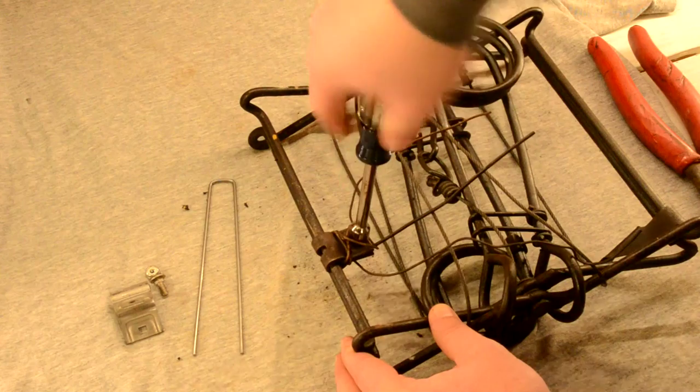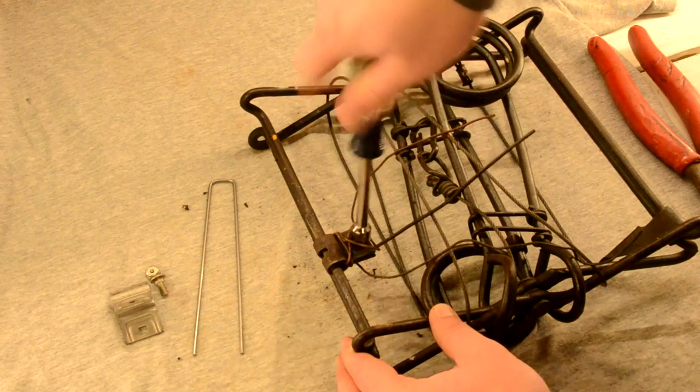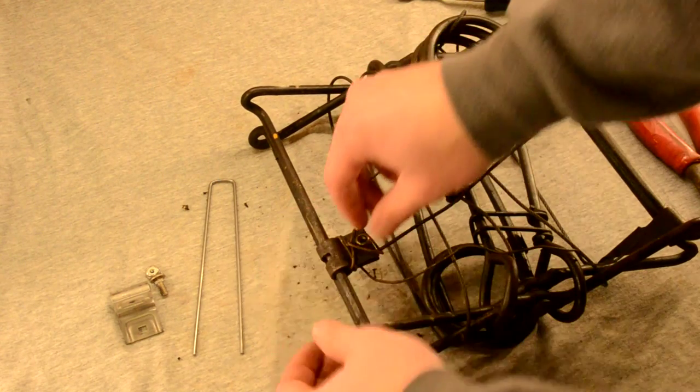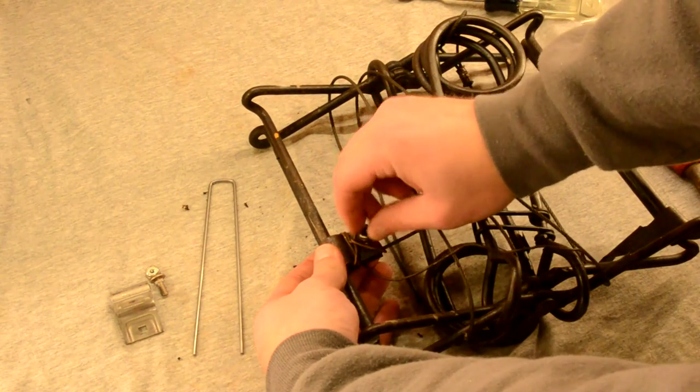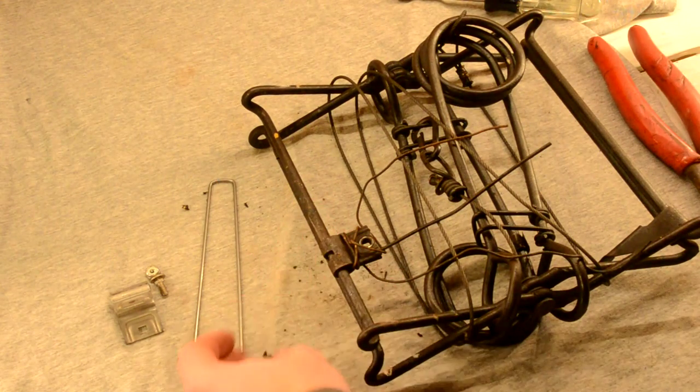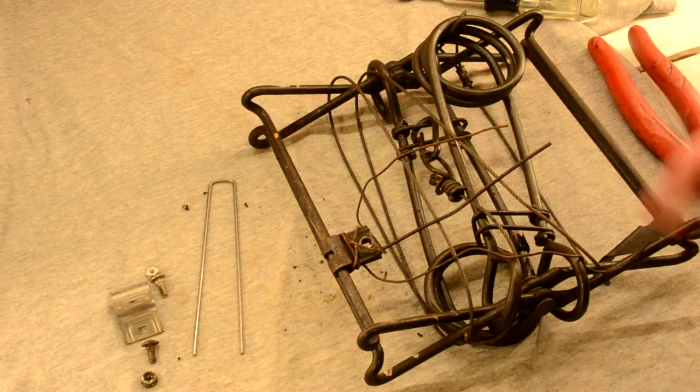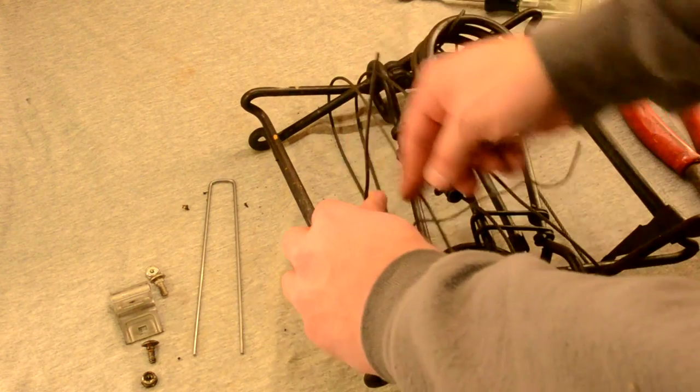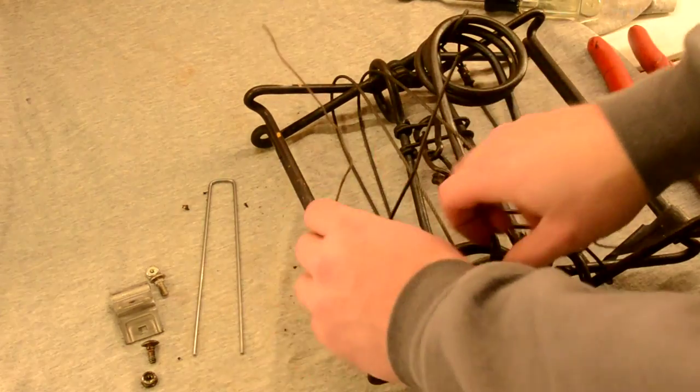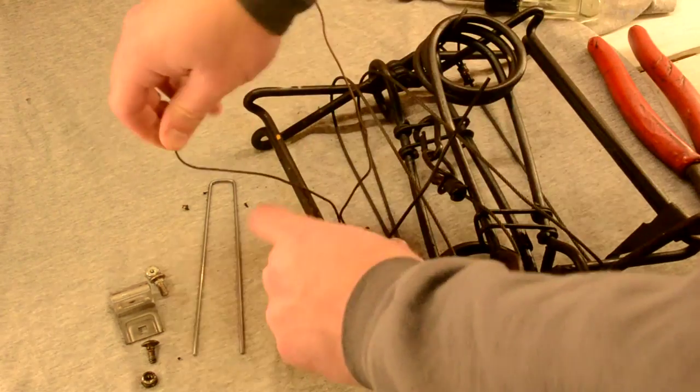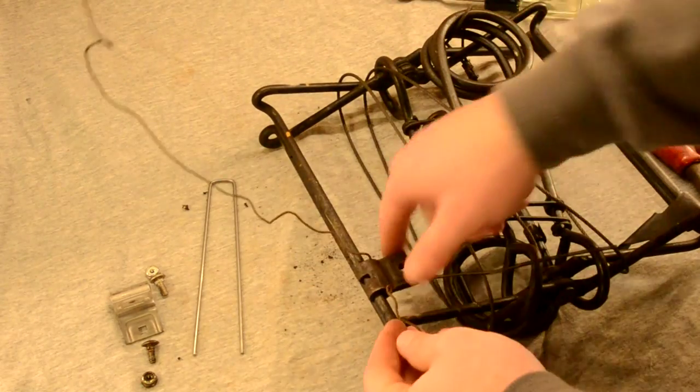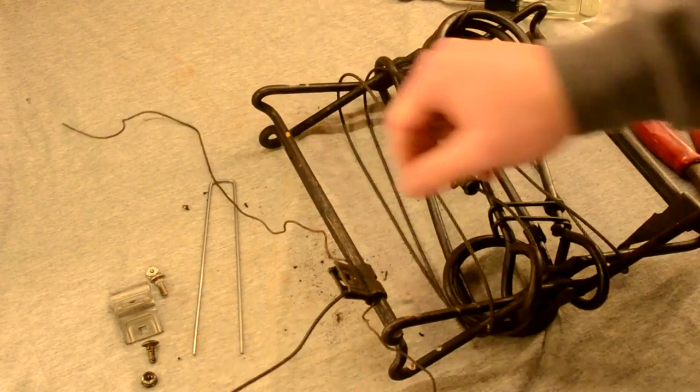Now some conibears will just have a rivet in there. So you may have to drill that rivet out to get your old trigger off. And then what I would suggest is putting your new trigger on with a lock nut or screw if you can.